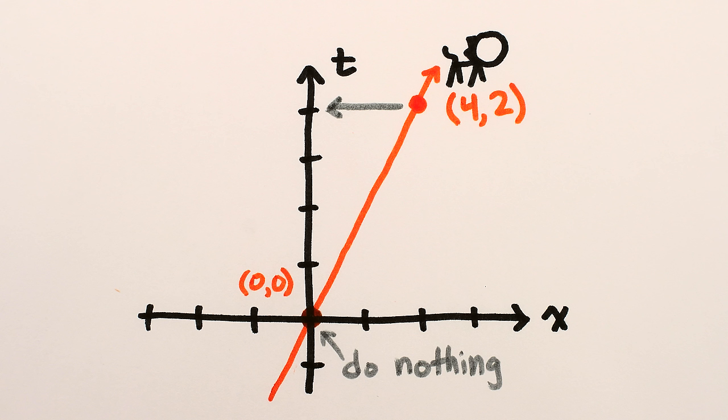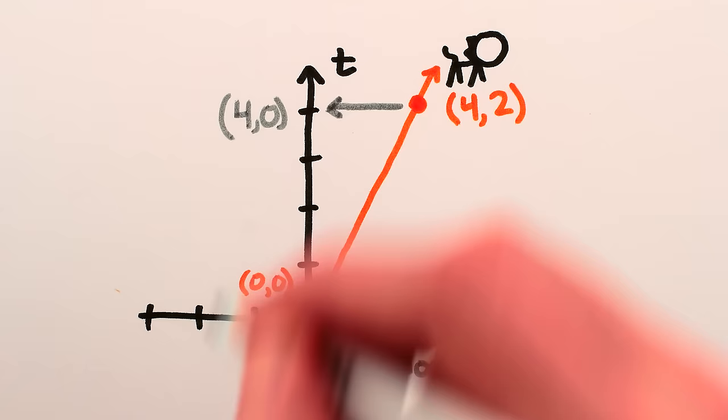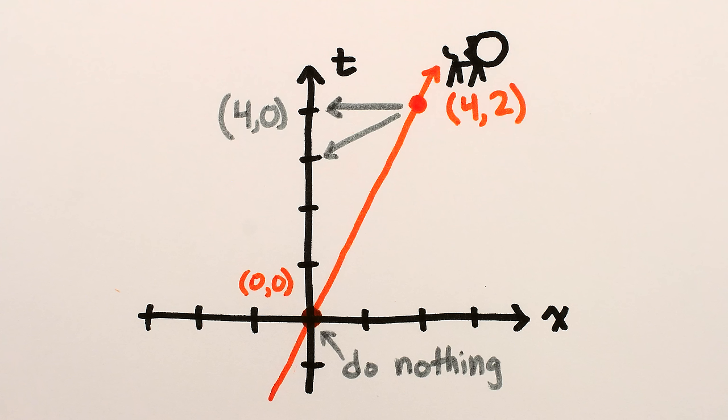Either this point gets moved onto the time axis while keeping it at the same point in time, t equals 4, or it gets moved onto the time axis at an earlier time, say t equals 3, or a later time, like t equals 5.